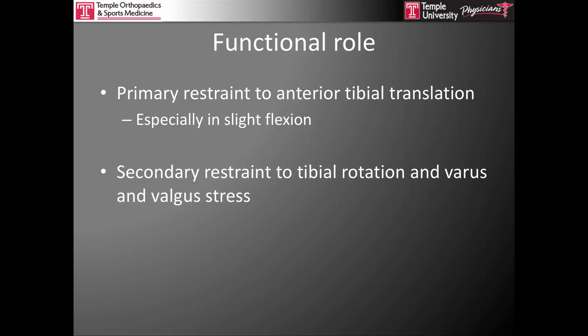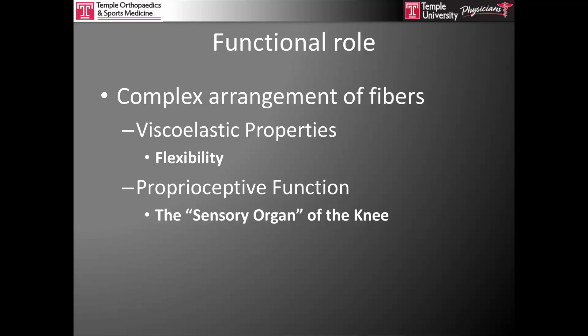The functional role of the anterior cruciate ligament is that it is the primary restraint to anterior translation of the proximal tibia, especially with the knee in slight flexion, and a secondary restraint to tibial rotation as well as to varus and valgus stress. The ACL has a complex arrangement of fibers — thousands of collagen fibers within each bundle that act relatively independently — allowing the ACL to have viscoelastic properties. This means the ligament's strength is dependent on the rate at which it is loaded, and it has some ability to stretch slightly, providing flexibility. The ACL also serves a proprioceptive function through its mechanoreceptor fibers and is considered the sensory organ of the knee.